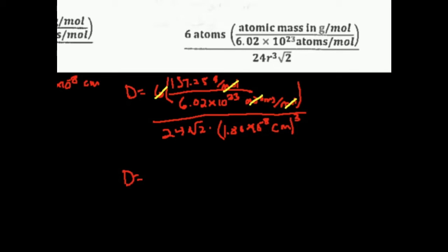Let me calculate this. 6 times 157.25 divided by the quantity—it's very important to use appropriate parentheses on your calculator—6.022 times 10 to the 23rd, divided by 24 square root of 2, divided by 1.8 times 10 to the minus 8, quantity cubed.